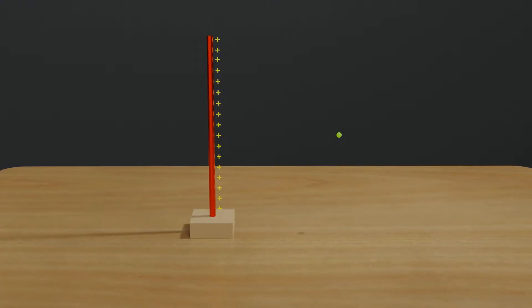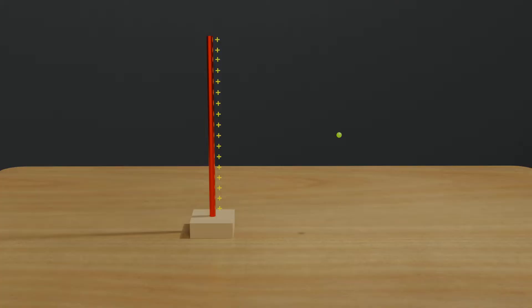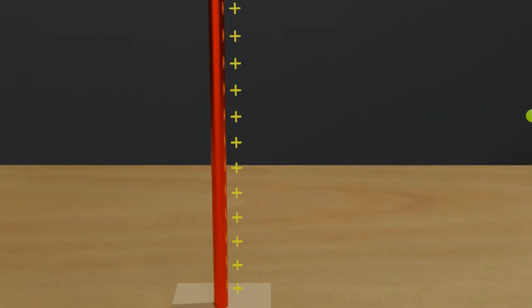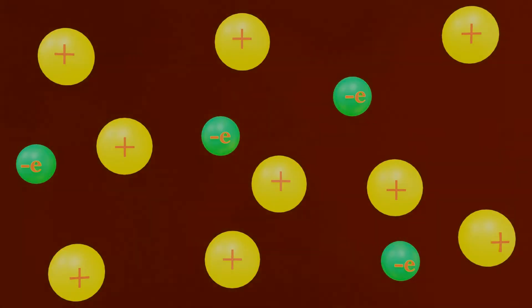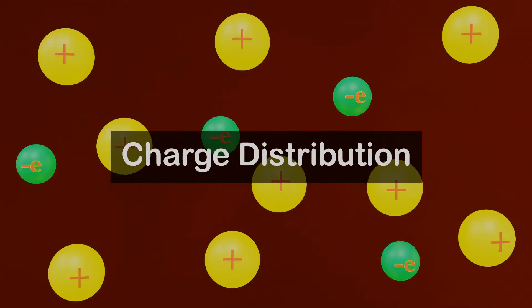What is charge distribution? If we talk about the distribution of charges at microscopic level, we can have many charges on a wire, and we can even think about spaces between charges where no charge is present. Such a distribution of charges is called a discontinuous charge distribution.